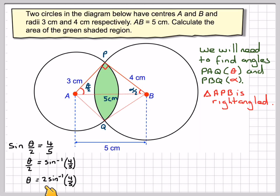Sorry, theta will be 2 times sine inverse of 4 over 5, which is all of that angle, which is what we need to consider.